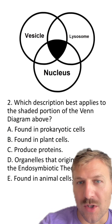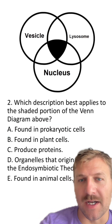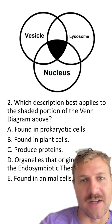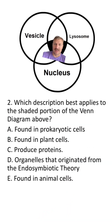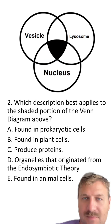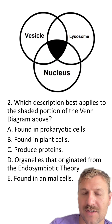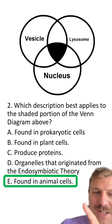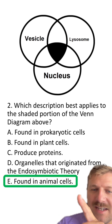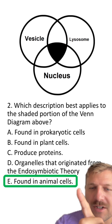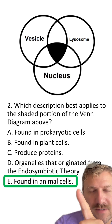Question two: which description best applies to the shaded portion of the Venn diagram above? In the Venn diagram, we have vesicles, lysosome, and nucleus. So which of these characteristics belongs in that shaded region? The answer here is E — they are all found in animal cells.